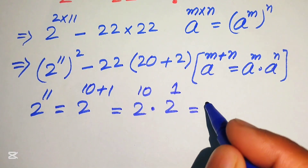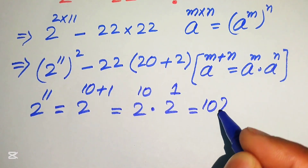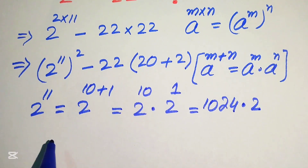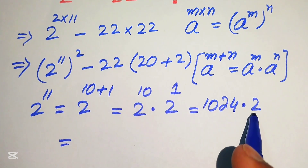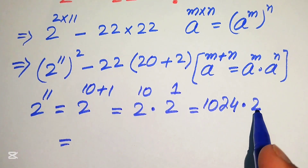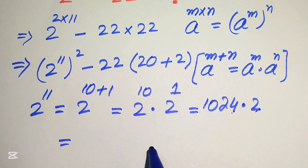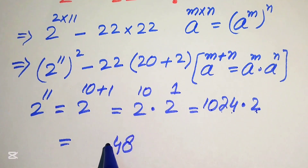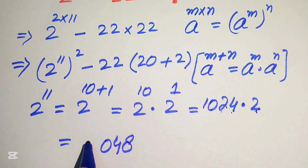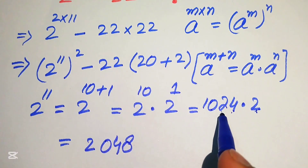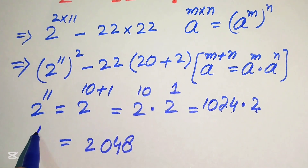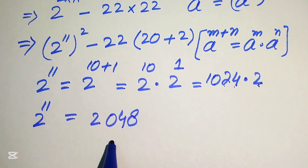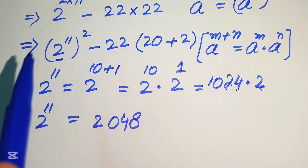We know that 2 to the power of 10 equals 1024, and 2 to the power of 1 equals 2. When you multiply 1024 by 2: 2×4=8, 2×2=4, 2×0=0, 2×1=2, giving 2048. So 2 raised to the power of 11 equals 2048.